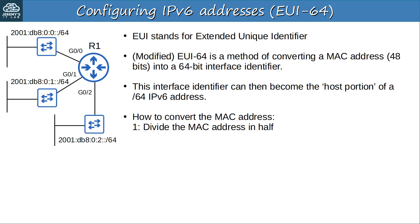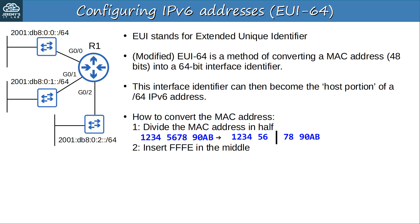The first step is to divide the MAC address — the MAC address of the interface — in half. For example, if the MAC address is 1234-5678-90AB, the middle is in between 6 and 7. The next step is to insert hexadecimal FFFE in the middle — so in between 6 and 7, insert FFFE. Now there's one more step: invert the 7th bit. If the 7th bit is a 0, make it a 1. If the 7th bit is a 1, make it a 0. This is trickier than the first two steps, but after Day 31's video you should feel comfortable working with hexadecimal and binary.